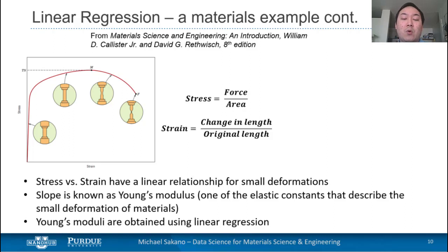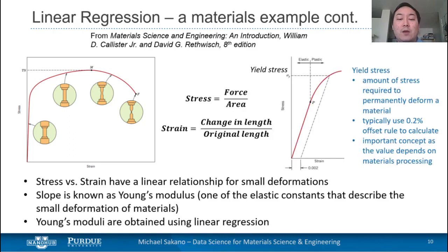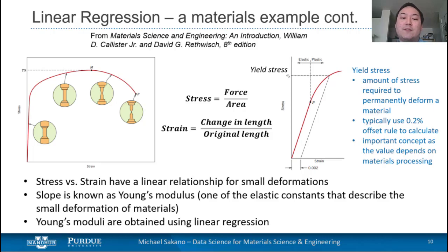The Young's modulus is an important concept because we can actually use linear regression to measure it if we have information about the stress and strain of the material. Once we determine the slope — the Young's modulus — from our stress-strain profile, we can use it to define another important materials property: the yield stress. The yield stress marks the beginning, or onset, of plastic deformation. This value is critical in materials selection because in many cases we want to avoid permanent deformation in our material. We can quantify the yield stress by using the 0.2% offset rule.